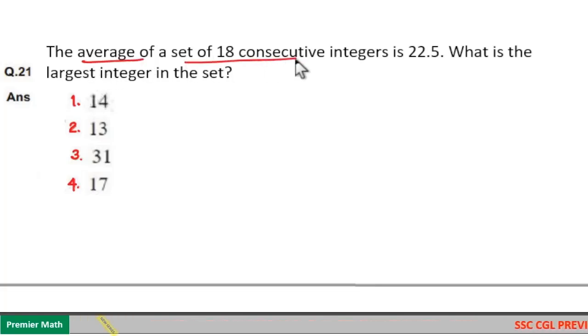The average of a set of 18 consecutive integers is 22.5. What is the largest integer in the set?